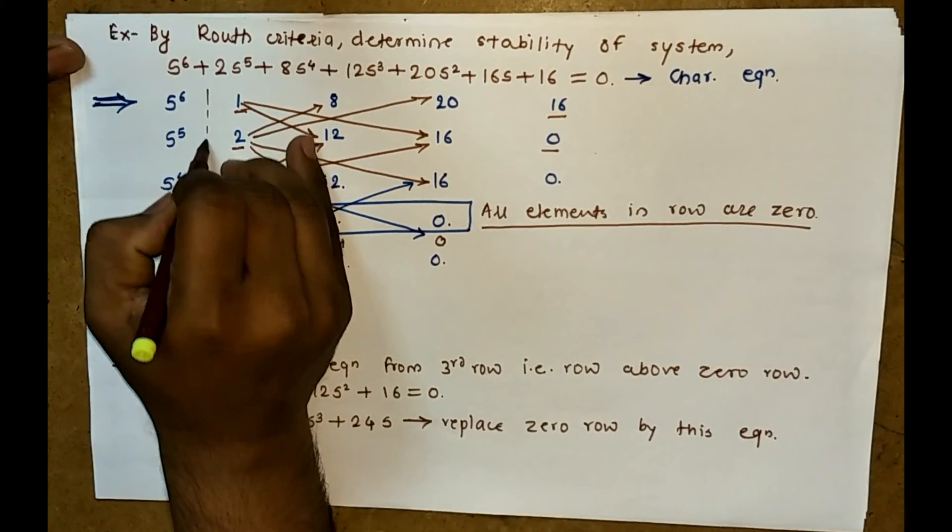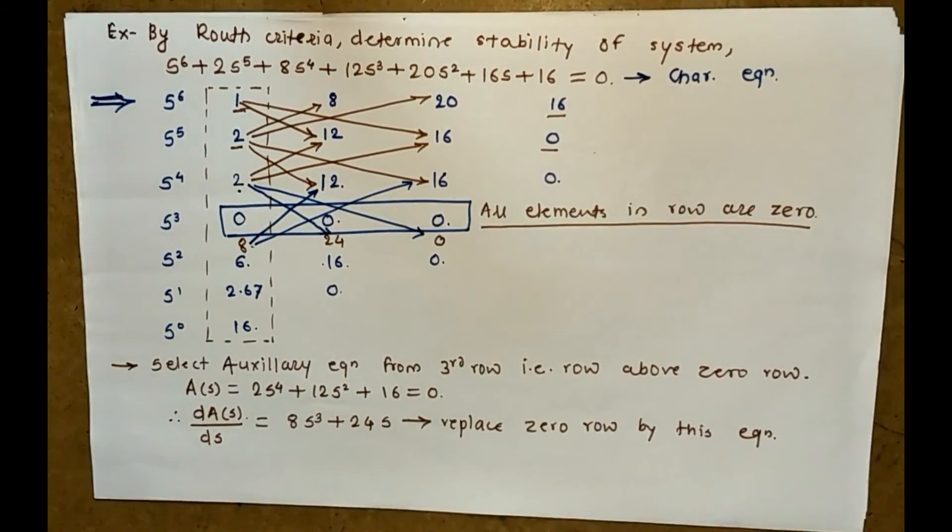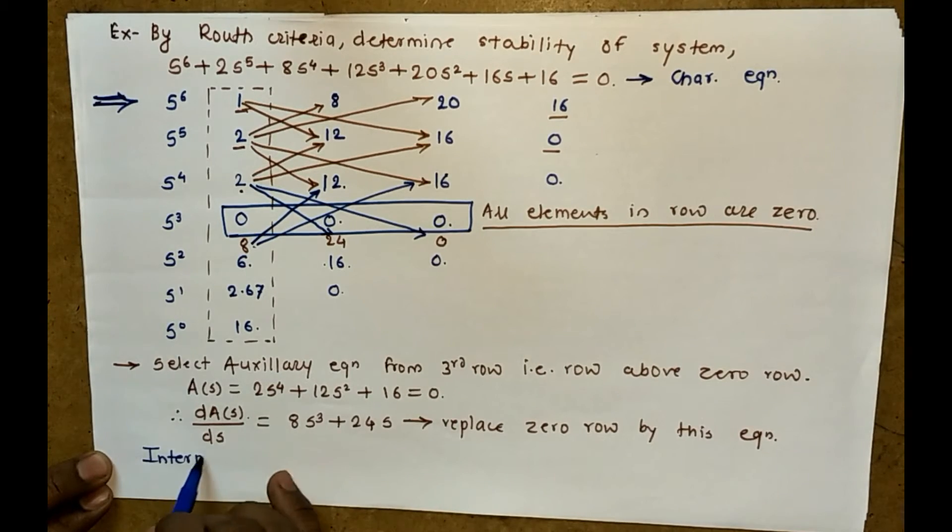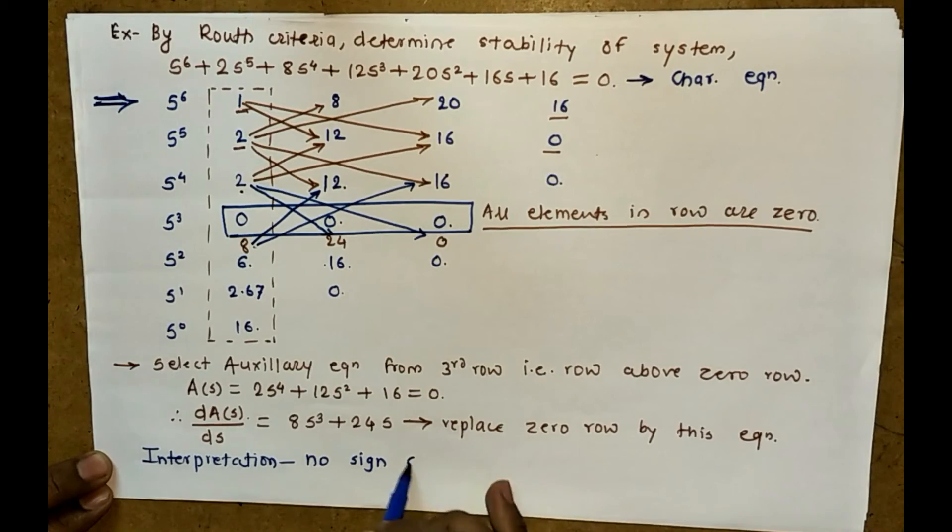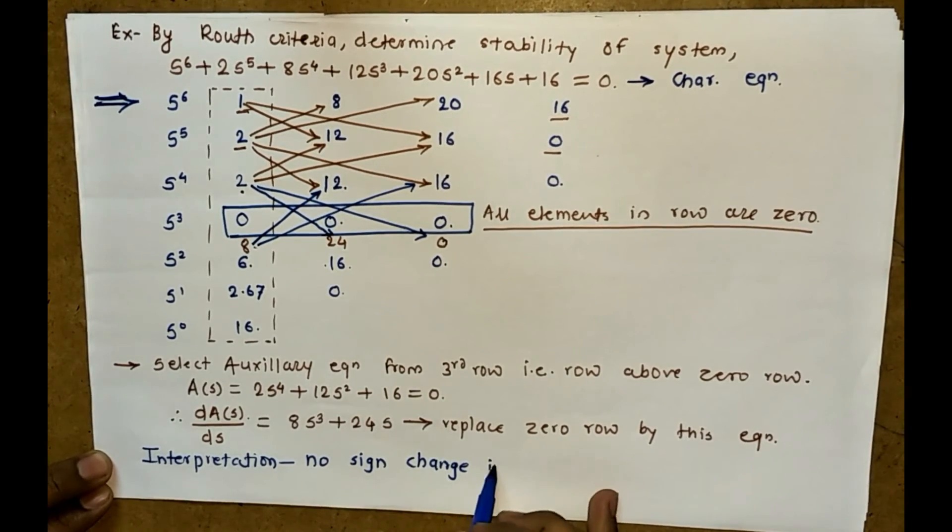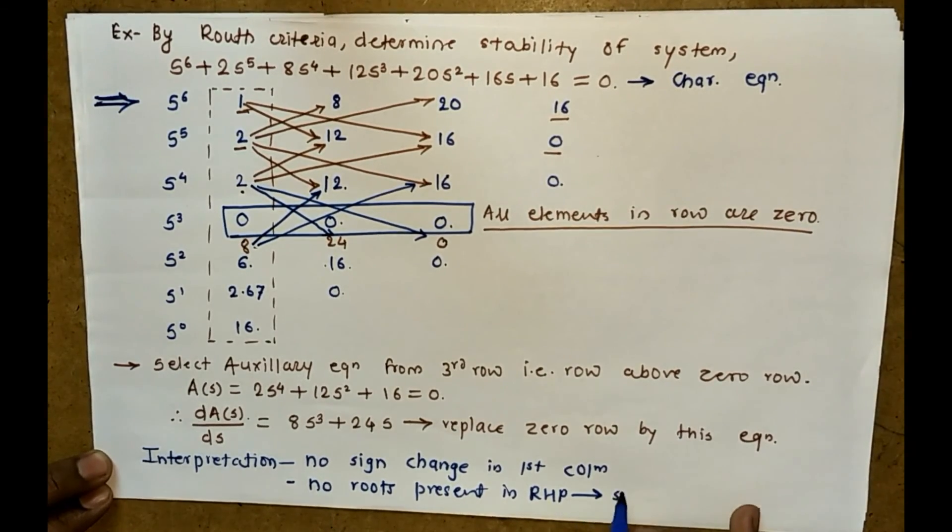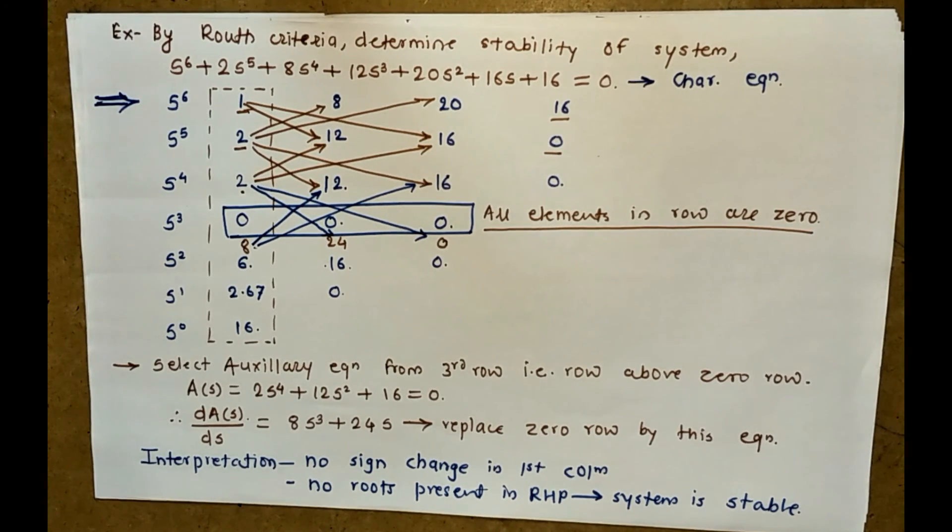Then solve this matrix, you will get answer 2.57, here you get 0, here you get 15. Now from the first column, no sign changes in the first column. Interpretation is no sign changes in first column, so no roots present in right-hand side plane of s-plane, so the system is stable. Thank you for watching this video. Let us try to solve more problems using Routh-Hurwitz criteria to find out the stability of systems.